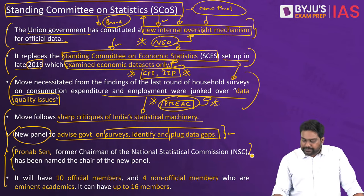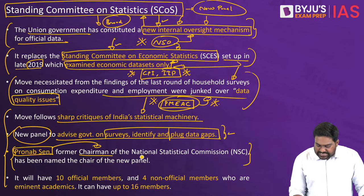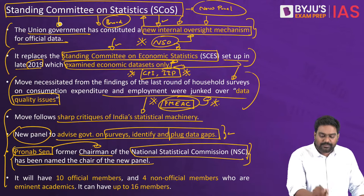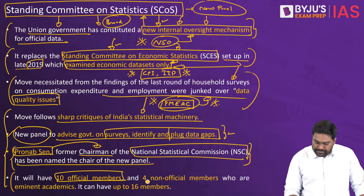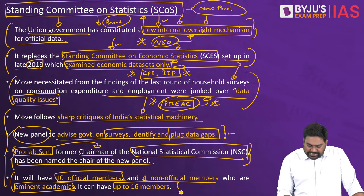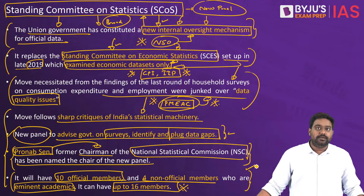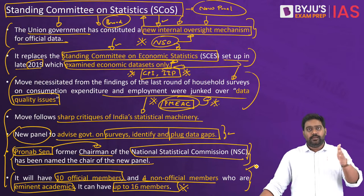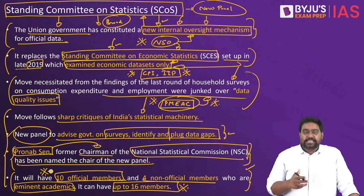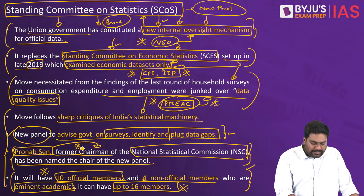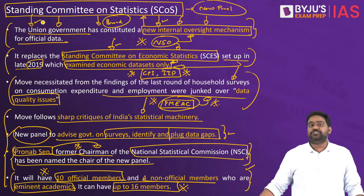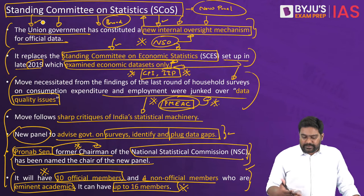Pranab Sen will be the chairperson of this Standing Committee — he was the former chairman of the National Statistical Commission. He has been appointed as chairperson of the Standing Committee on Statistics, which will contain 10 official members and 4 non-official members who are eminent academics particularly in the field of statistics. The committee can have a maximum of 16 members. It's a key reform being introduced in the field of statistics to improve data gathering and sample surveys in India.